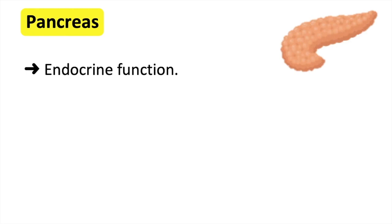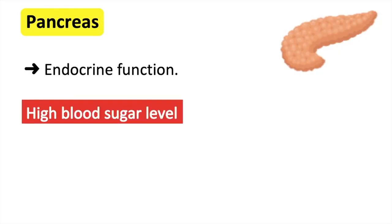The endocrine function is to regulate blood sugar. The pancreas produces and releases insulin and glucagon. When there's too much sugar in the blood, the pancreas produces and releases insulin into the blood. This helps to remove glucose by converting it into energy and releasing it into the blood. This energy can also be stored for later use.